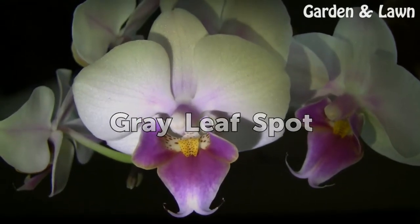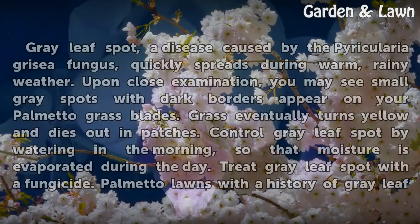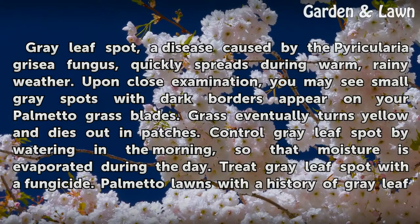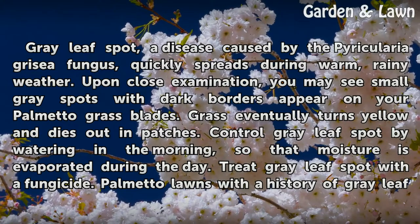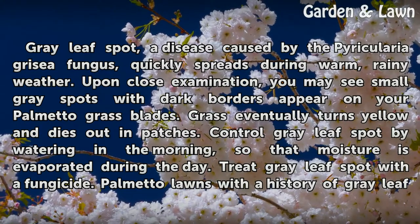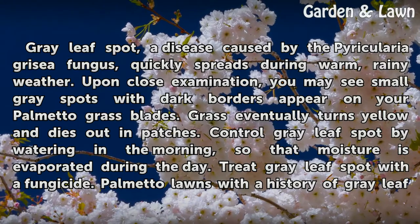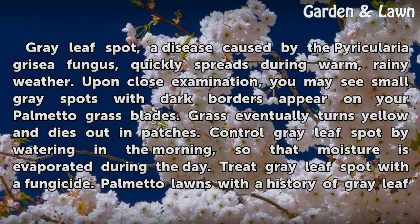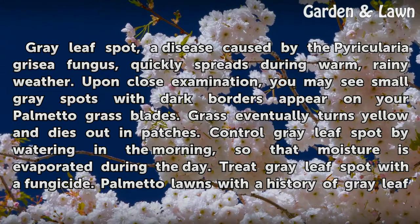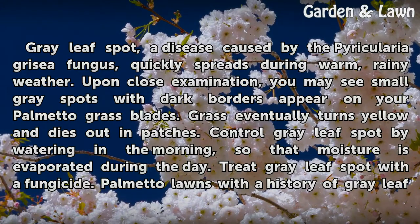Gray Leaf Spot, a disease caused by the Bipolaris grisia fungus, quickly spreads during warm, rainy weather. Upon close examination, you may see small gray spots with dark borders appear on your palmetto grass blades. Grass eventually turns yellow and dies out in patches.